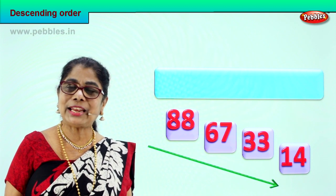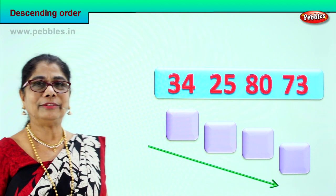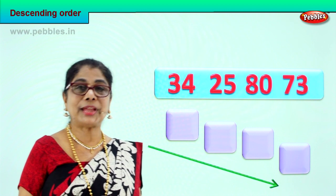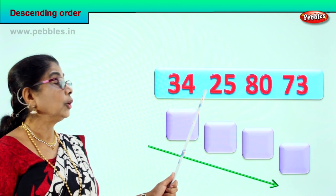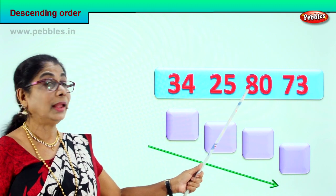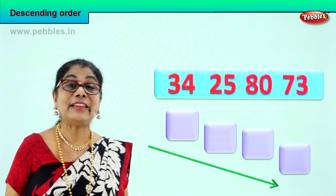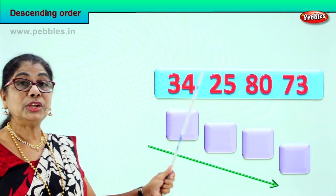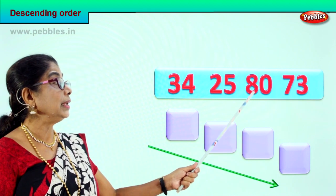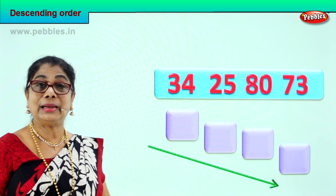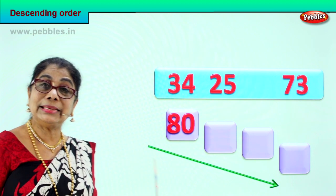Shall we take one more set of numbers? Let's take the next exercise. Look at the numbers and check the tens please. Thirty-four: three tens. Twenty-five: two tens. Eighty: eight tens. Seventy-three: seven tens. So we have three tens, two tens, eight tens, seven tens. Which is the biggest of the four numbers? Certainly eight tens, zero ones — eighty is the biggest number and we put it right on top because we are doing descending order.